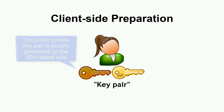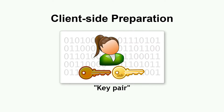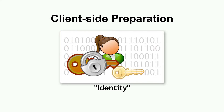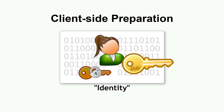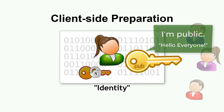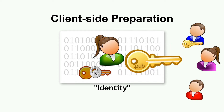Sometimes this Public-Private Key pair is referred to as an identity. The Private Key is kept secure and protected on the client side. The Public Key is, well, public — it cannot be used to derive the Private Key, so it can be shared with others.